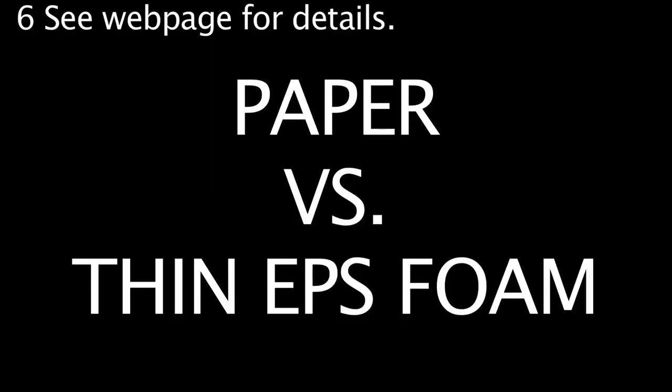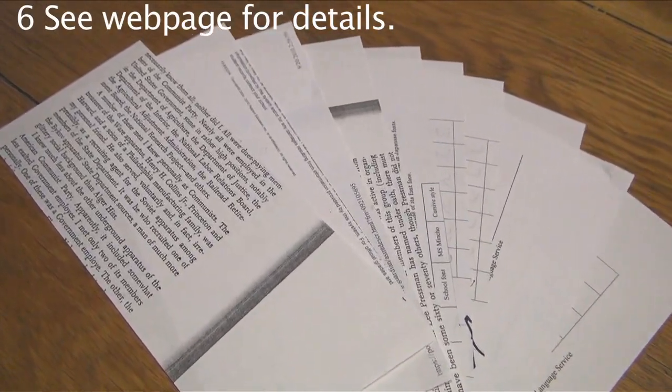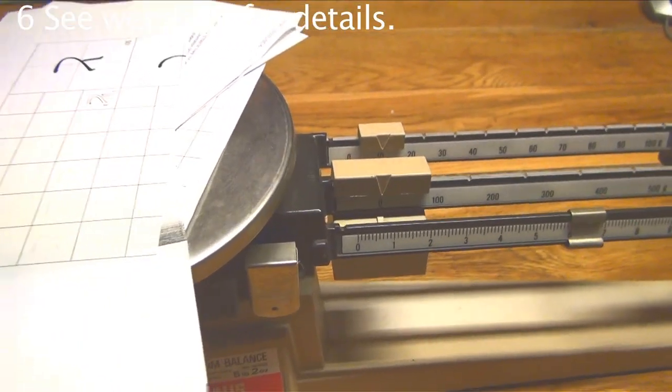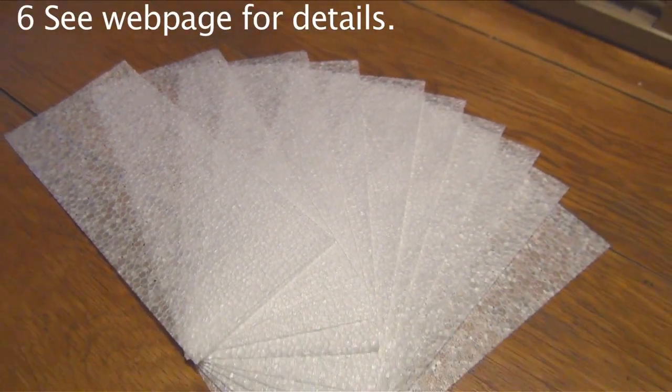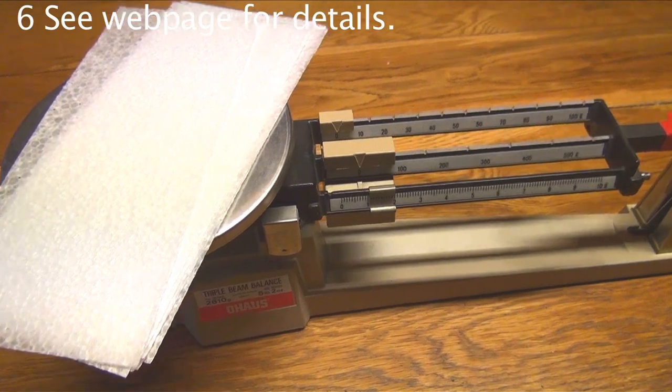Let's compare paper to EPS foam. 10 sheets of printer paper cut to the standard size I use for gliders are over 16 grams. 10 sheets of EPS foam only weigh 2 grams.